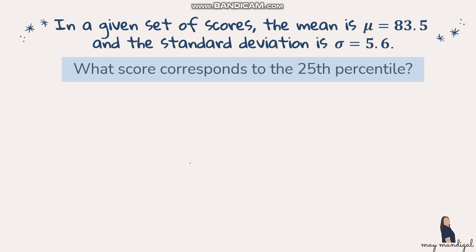Let's try an example. In a given set of scores, the mean is 83.5 and the standard deviation is 5.6. What score corresponds to the 25th percentile? First, let's draw the normal curve. Since it's the 25th percentile, the score is above 25 percent of the total scores, so the 25th percentile falls to the left of center.